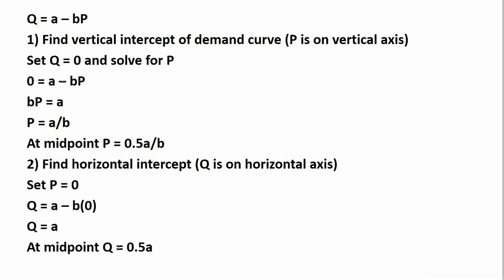The next step is to find the horizontal intercept where the demand curve touches the quantity axis. Here we're going to set P equal to 0. When P is 0, Q equals A. Again at the midpoint of the demand curve, quantity will take on half of this value. So at the midpoint, quantity will equal 0.5A.